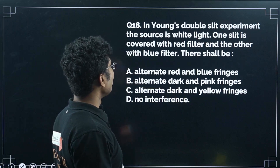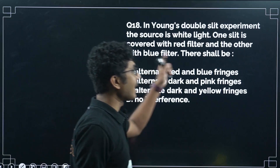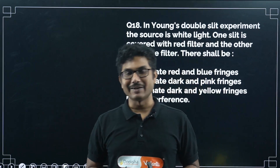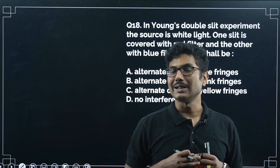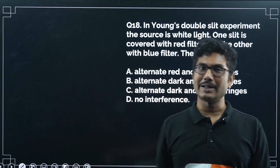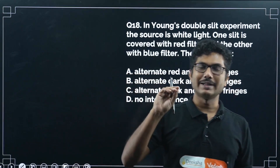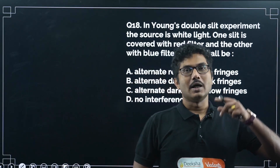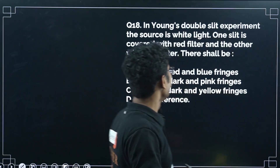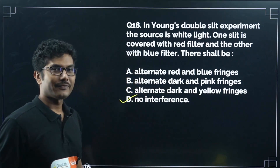In Young's double slit experiment with white light, one slit is covered with a red filter and the other with blue. There will be no interference pattern because interference requires monochromatic light — red and blue light have very different wavelengths and will not interfere with each other. So we will not get any interference fringes in this case.